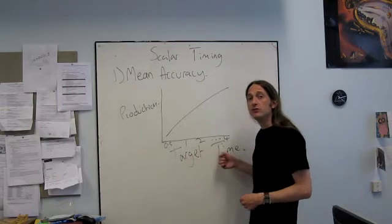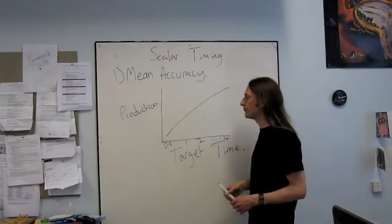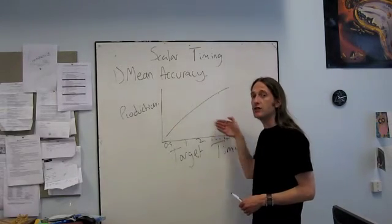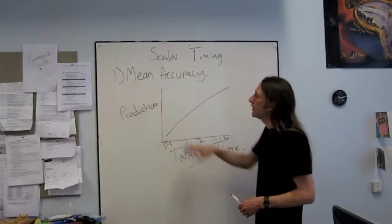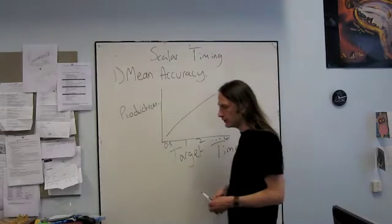What you get is something like this. The longer the amount of time you ask them to produce, the longer the actual time they do produce. On average they are accurate and they have a linear relationship between the two. That's mean accuracy. That's quite simple to grasp, quite simple to understand.